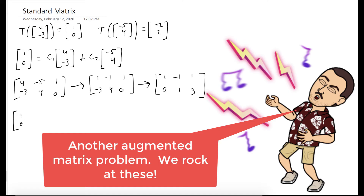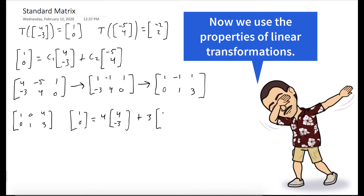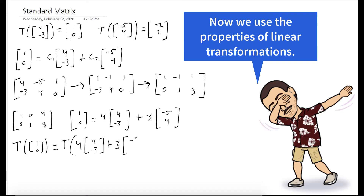When we do that, we see that C1 equals 4 and C2 equals 3. So we can write (1, 0) as 4 times (4, -3) plus 3 times (-5, 4). So our transformation maps (1, 0) the same way it maps 4 times (4, -3) plus 3 times (-5, 4).